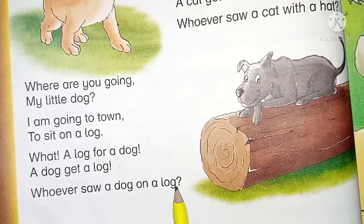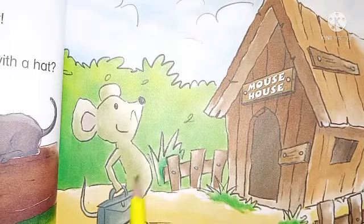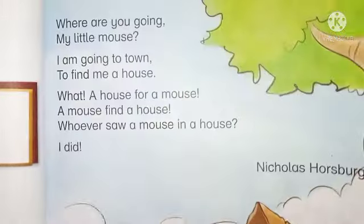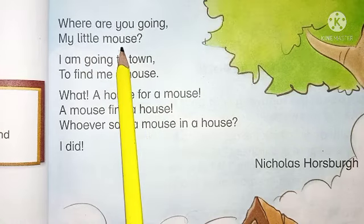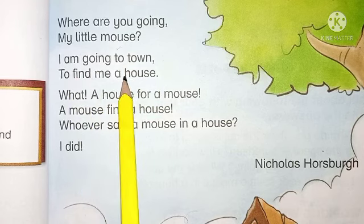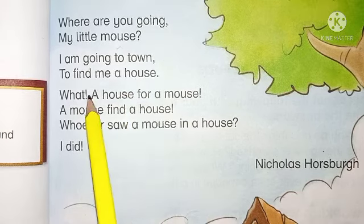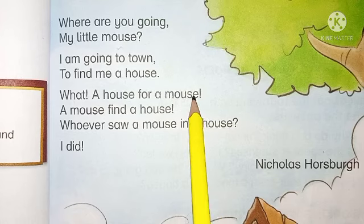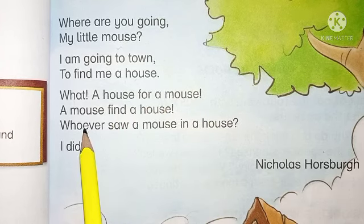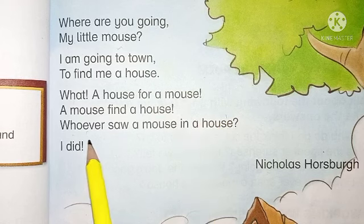'Whoever saw a dog on a log?' — کس نے dog کو ایک لکڑی پہ بیٹھے ہوئے دیکھا ہے. Now the next lines are about a mouse going to town to get a house. 'Where are you going, my little mouse?' — میرے چھوٹے mouse، آپ کہاں جا رہے ہو. 'I am going to town to find me a house' — میں town جا رہا ہوں اپنے لئے گھر تلاش کرنے. 'What a house for a mouse! A mouse find a house? Whoever saw a mouse in a house?' — کس نے mouse کو ایک گھر میں رہتے ہوئے دیکھا ہے. I did — میں نے.